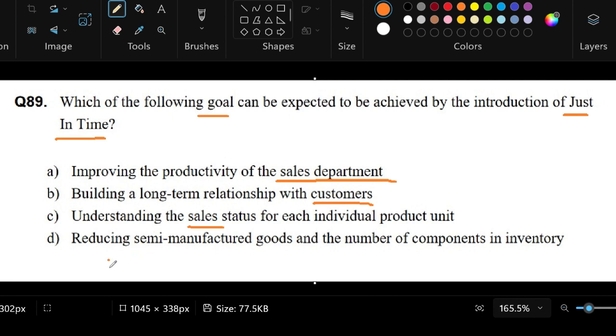What about letter D? Reducing semi-manufactured goods and the number of components in inventory. This part about inventory and this part about semi-manufactured goods - I think letter D is the best answer because of the keywords.